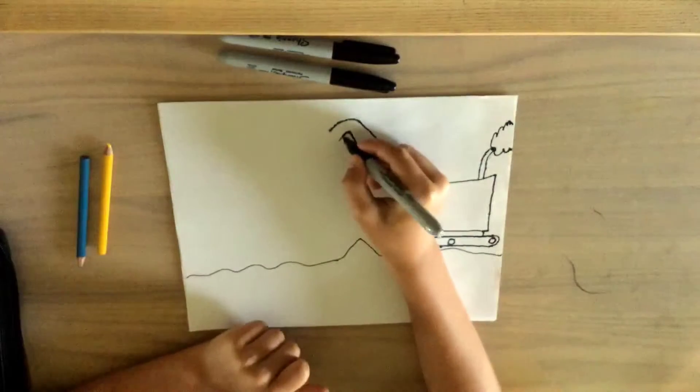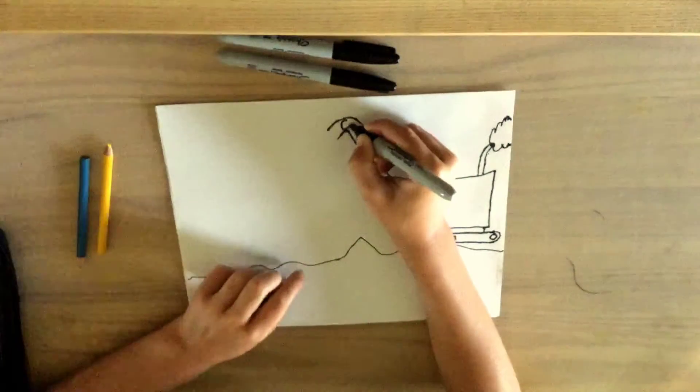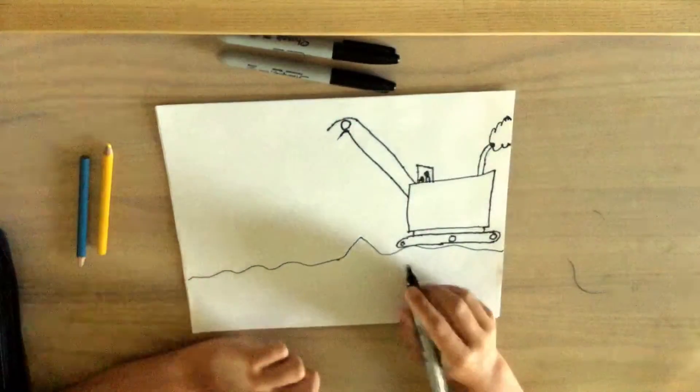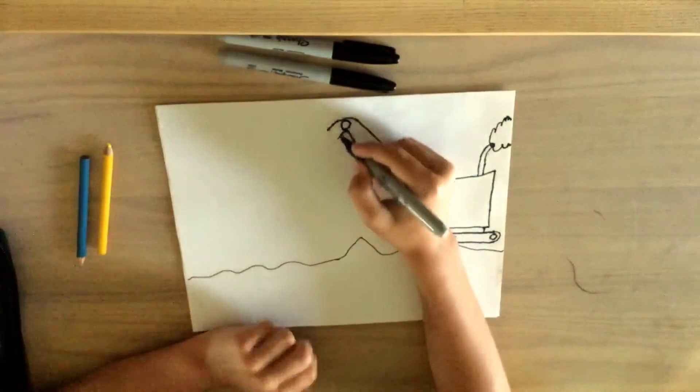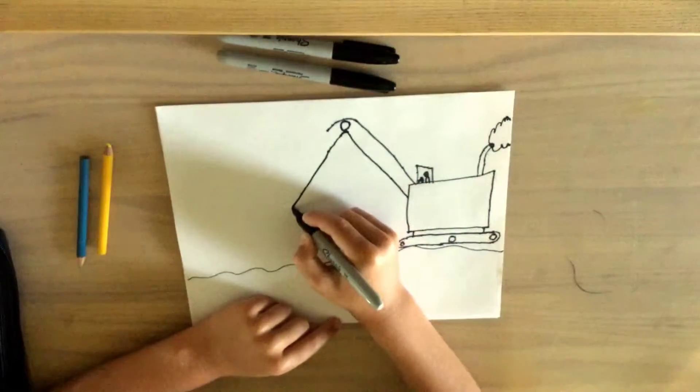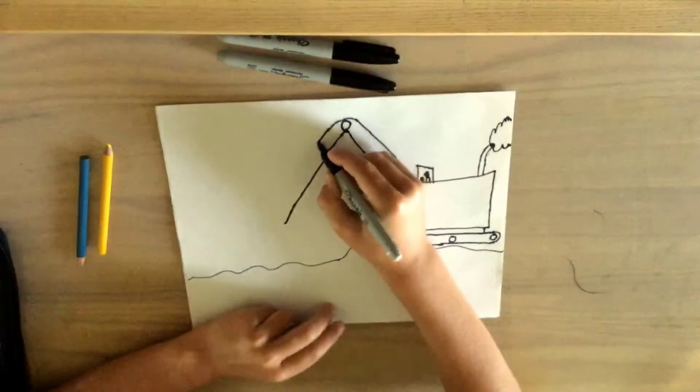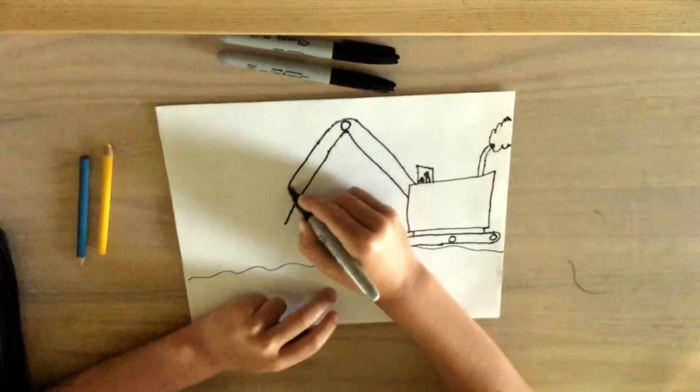And then they'll both match up. Now inside right there we're going to draw another one of those circles like we did down here. Now we're going to draw a line that comes all the way down to almost the bottom of the page, not the bottom of the page but towards where we made the ground.